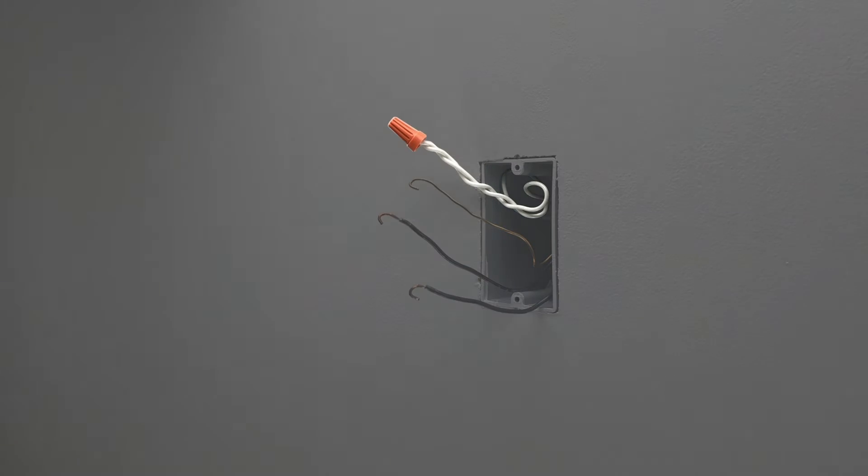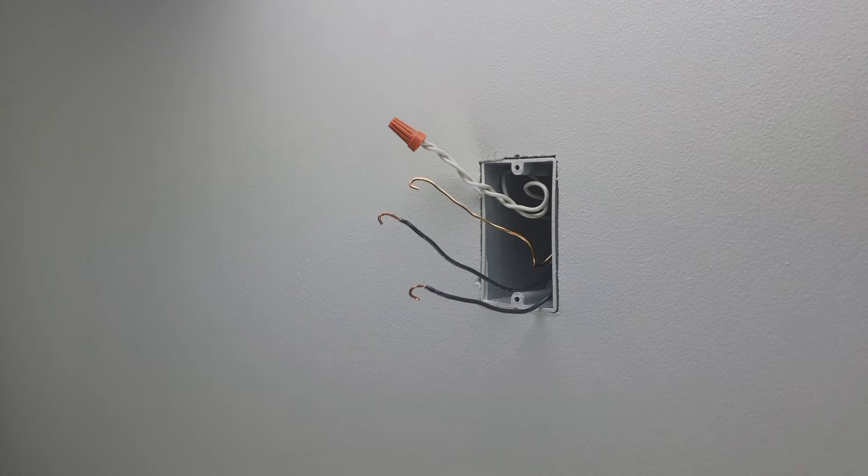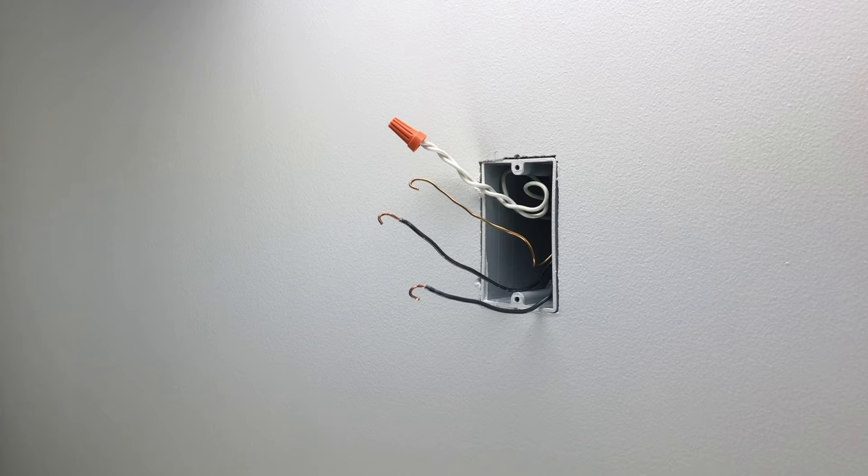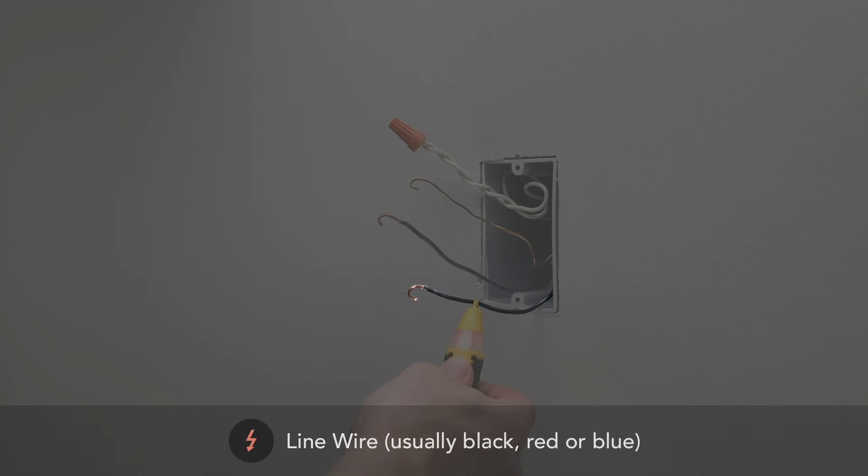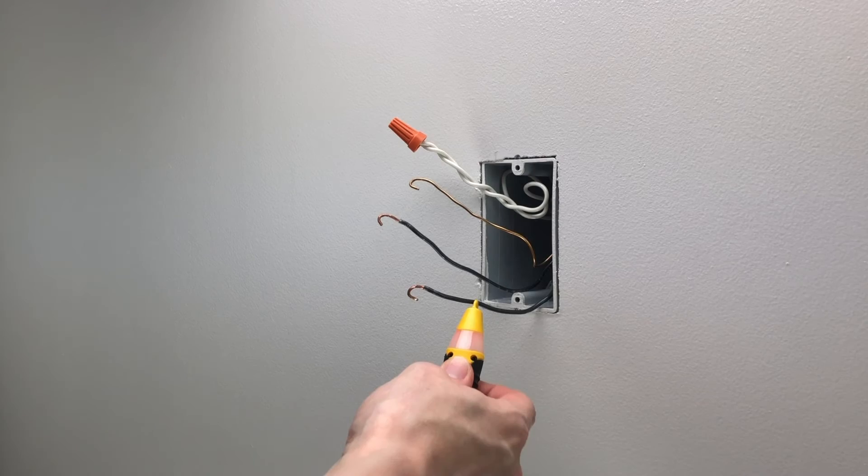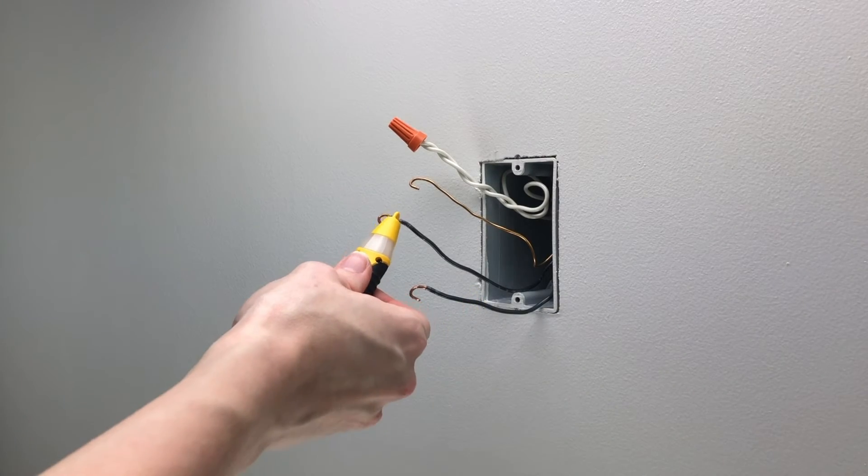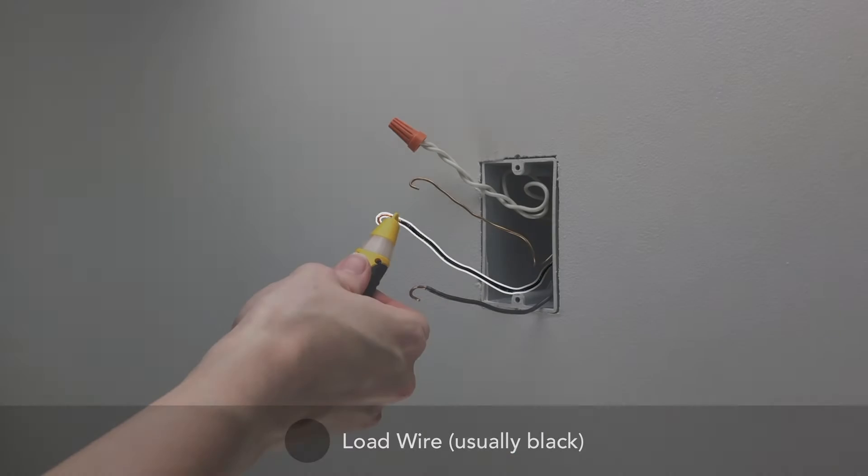Neutral wires will usually be white and are often bundled together. The ground wire is usually bare copper or green. To easily identify the load and line wires, both usually black, use a voltage detector. The energized wire is the line wire. Note this wire for reference and mark with tape if it's helpful. The wire that is not energized is the load wire. Note this wire for future reference as well.